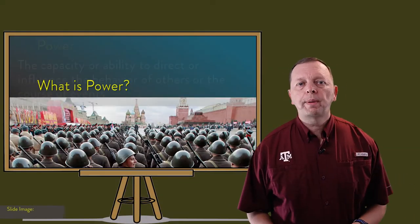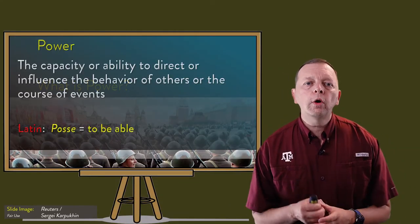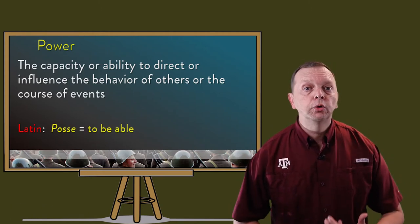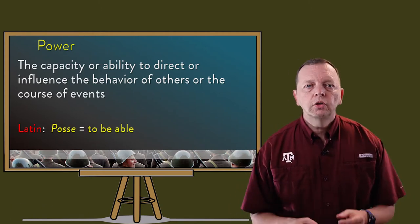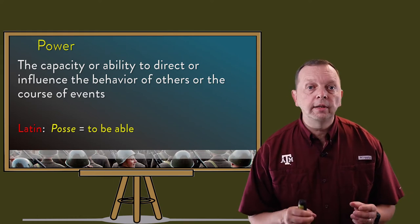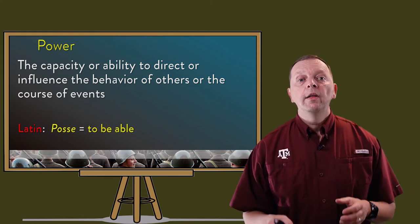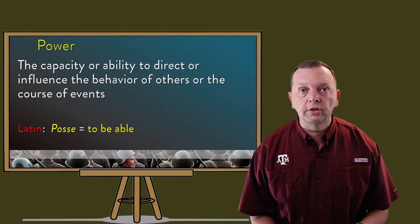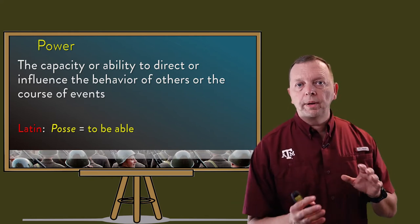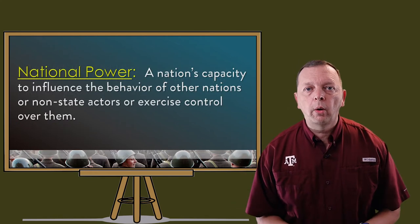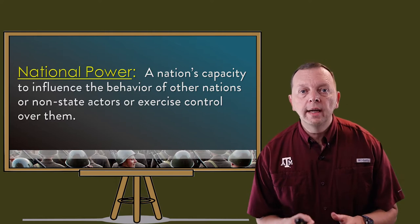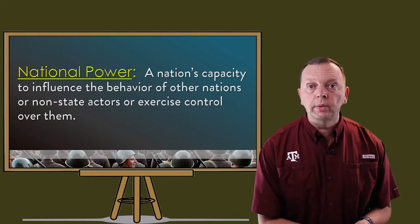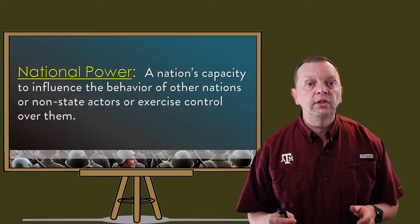So first, we must answer: what is power? The word power comes from the Latin word which means to be able — it's being able to do something. So the actual definition of power is having the ability to direct or influence the behavior of others or the course of events. We can see the same definition applied to nations and national power, which is the nation's ability to influence behavior or exercise control over other countries or non-state actors.